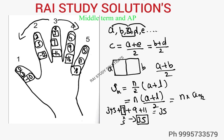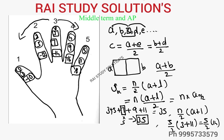You can also verify using the standard formula: n/2 × (a + l) = 5/2 × (3 + 11) = 5/2 × 14 = 35. So the easiest way to find the sum is: number of terms multiplied by the middle term. I hope that is clear to you now.